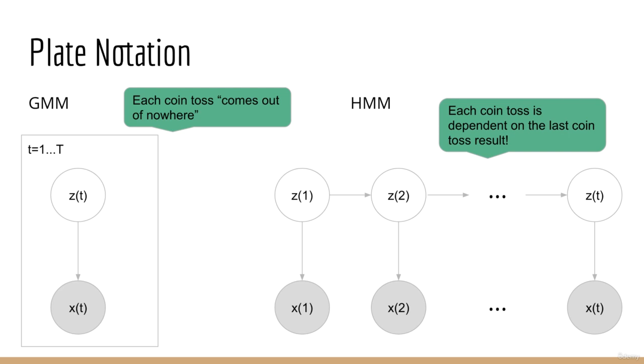So here's the difference. It says that for the GMM, each Z is a coin toss, but it's a coin toss that just comes out of nowhere. It does not depend on anything. On the other hand, for the HMM, each Z is still a coin toss, but it's a coin toss that depends on the result of the last coin toss. So that's the big difference between GMMs and HMMs. With GMMs, our coin tosses are independent. With HMMs, our coin tosses are dependent on the last coin toss, and they form a Markov chain.